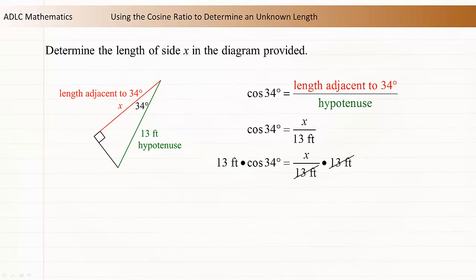Now use a calculator to evaluate 13 times the cosine of 34 degrees. This value is approximately 10.8.